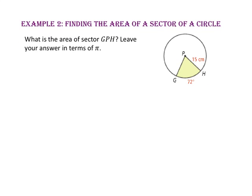In example 2, we will find the area of sector GPH. What is the area of sector GPH? Leave your answer in terms of pi. Since arc GH has a measure of 72 degrees, sector GPH is 72 out of 360 of the entire area, or one-fifth of the area of the circle. The area of the circle is pi times the radius squared: 15 squared is 225, so the area is 225π.